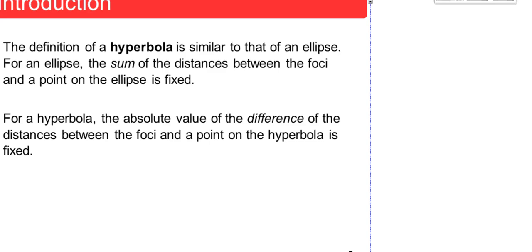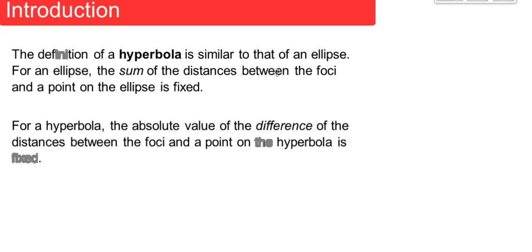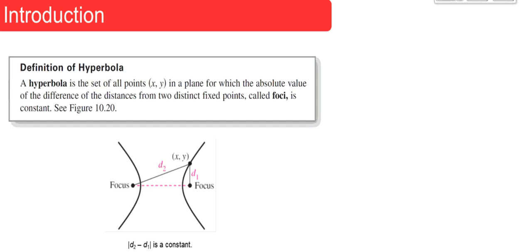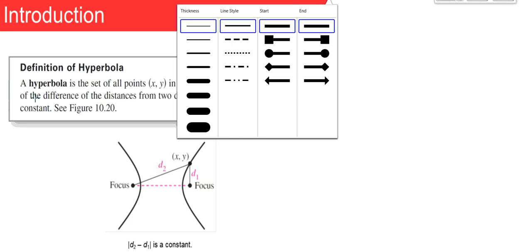Here's our introduction. The definition of a hyperbola is similar to that of an ellipse. For an ellipse, we look at the sum of the distances between the foci and a point on the ellipse that is fixed. For a hyperbola, it's the absolute value of the difference of the distances between the foci and a point on the hyperbola that is fixed.